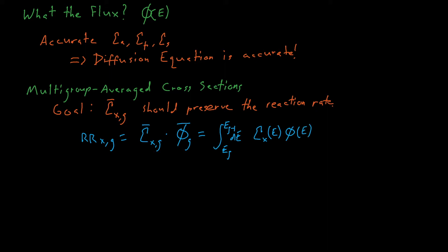Here, E sub G is the lower energy for that group, and E sub G minus 1 is the upper energy bound. This might be a little confusing, but remember that group 1 is the lowest group, which means that E G minus 1 should be higher than E sub G. If we have the right multigroup cross-section, this reference reaction rate will also be equal to the multigroup average cross-section for reaction X and group G times the group average flux for group G.